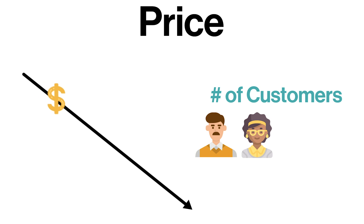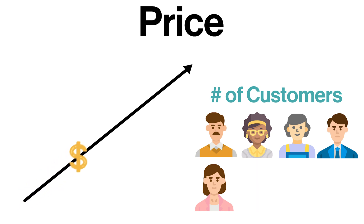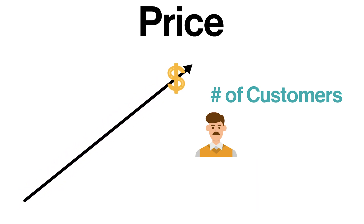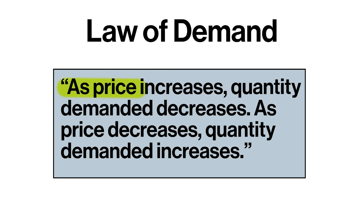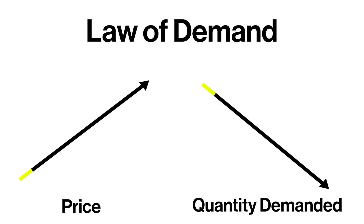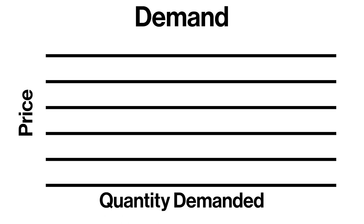The biggest factor in these decisions is price. All things being equal, the cheaper something is, the greater the number of customers that will want to buy it, and the more expensive something is, the fewer the number of customers that will want to buy it. The law of demand is all about price. As price increases, quantity demanded decreases; as price decreases, quantity demanded increases. There's an inverse relationship between price and quantity demanded.